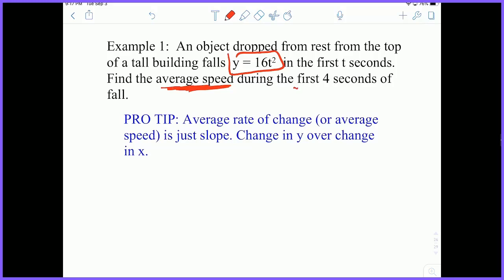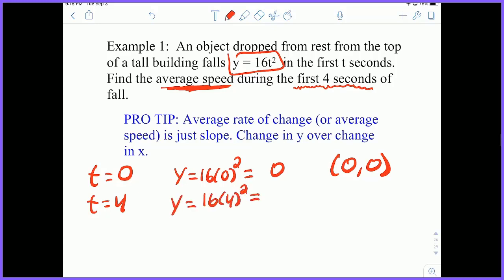So if I'm concerning myself with the first four seconds, what I'm really concerning myself with is the beginning, which is t equals 0, and the end, which is t equals 4. So if I ask myself, what's the position of this object at t equals 0? I just have to plug 0 into the function, and I get 0. And this gives me the coordinate (0, 0). And if I want to figure out the position at 4, I just plug 4 into t, and I get 256. It gives me the coordinate (4, 256).